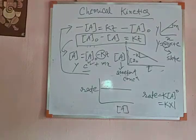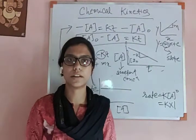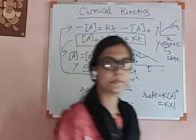So we have two types of graphs. In the next class, we will start from the half-life of a zero order reaction.